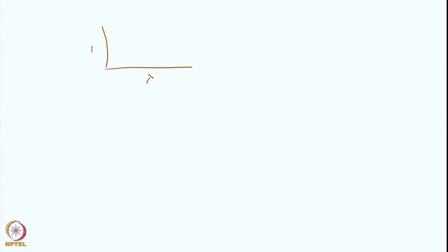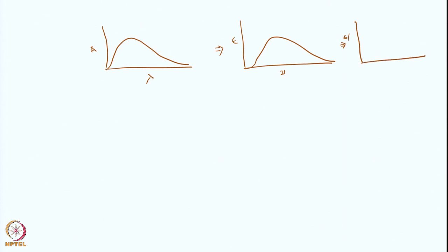If you have an absorption spectrum recorded as a function of lambda, you get absorbance A. This can be transformed as a function of epsilon as a function of nu, giving a different shaped spectrum. And when you plot epsilon of nu divided by nu as a function of nu, the integral of epsilon(ν)/ν dν — which is the area under this curve — is proportional to the Einstein B coefficients, A coefficients, and the transition moment integral.